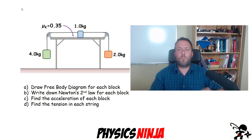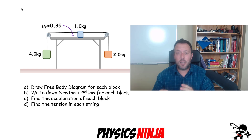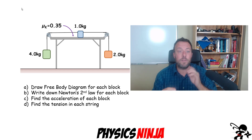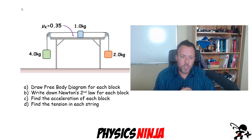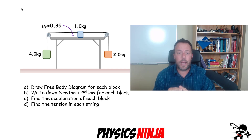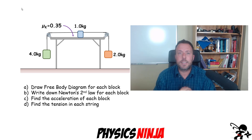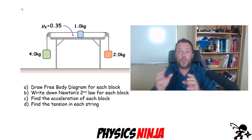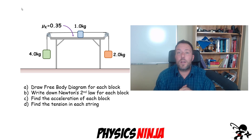Hi everybody, Physics Ninja here. We have a great Newton's second law problem for you here. We have three blocks, two strings, kind of a mixed pulley problem. We also have friction between the top block and the tabletop it's resting on. The first question is to draw the free body diagram. Question two, write down Newton's second law for each of those three blocks, and then we're going to solve for the acceleration of each block and the tension in each of the two strings.